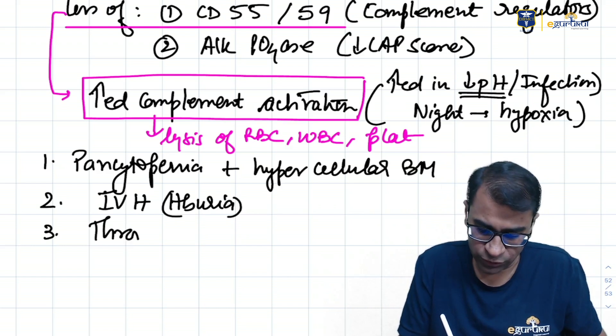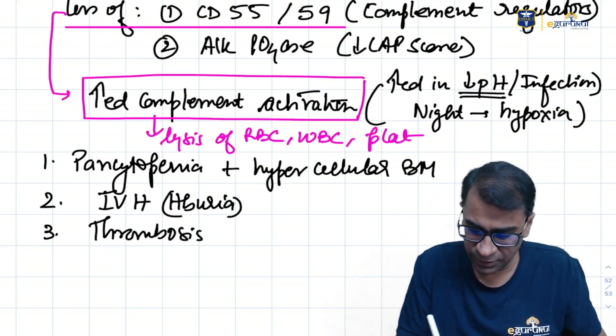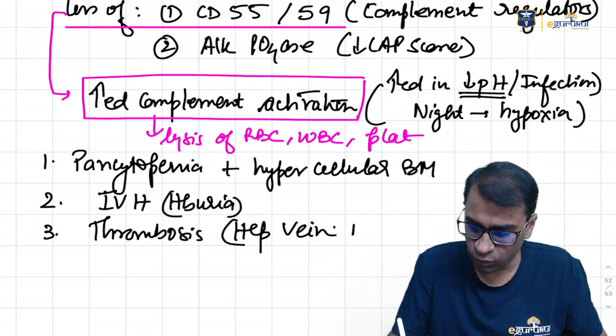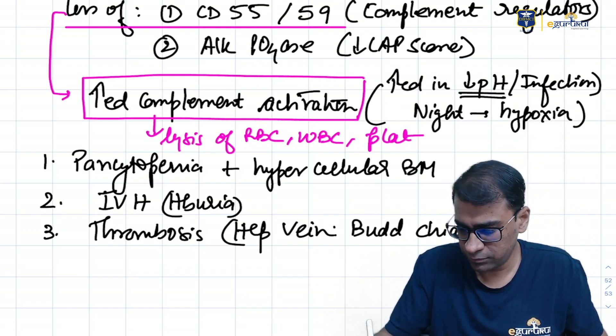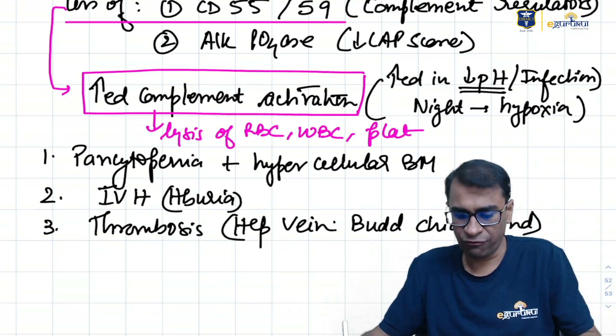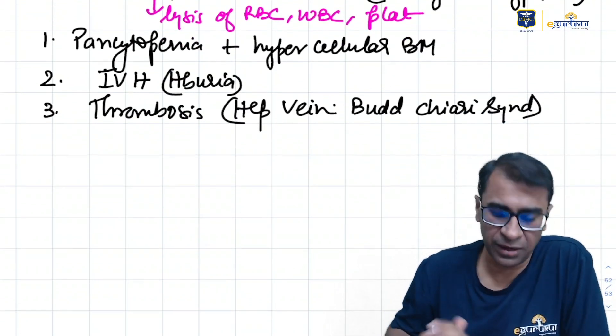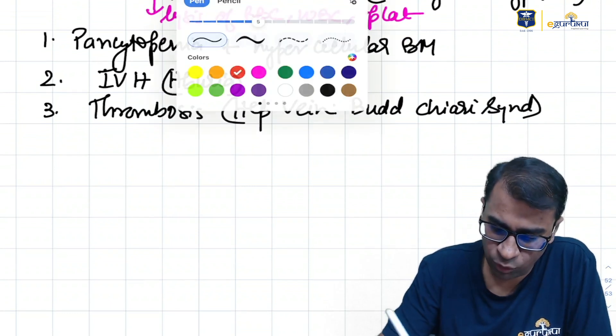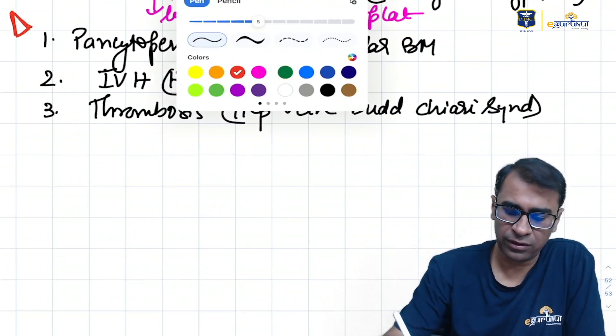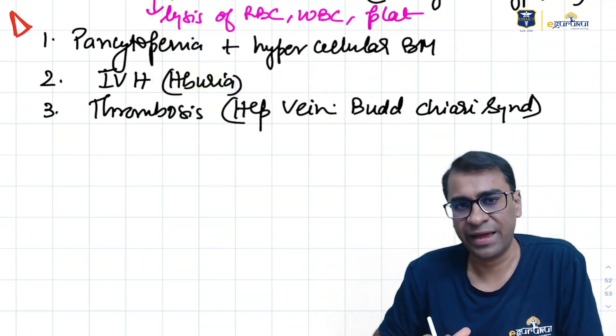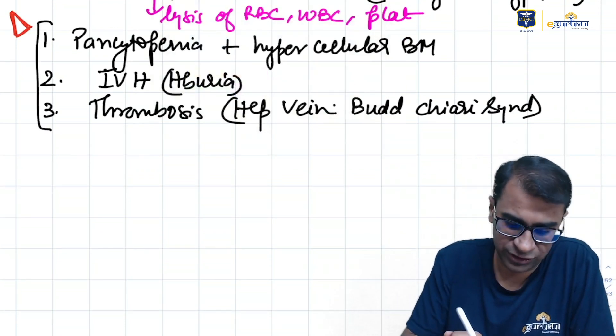And third is thrombosis, especially of the hepatic veins, called Budd-Chiari syndrome. Hepatic vein thrombosis called Budd-Chiari syndrome. This whole thing is called a triad, the triad of PNH. These three.